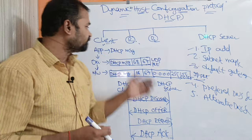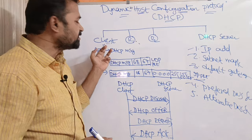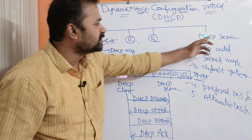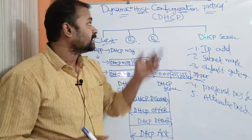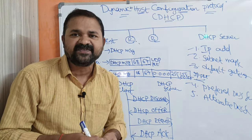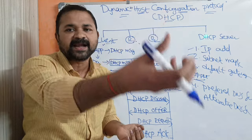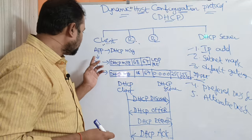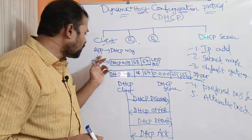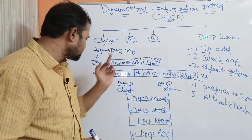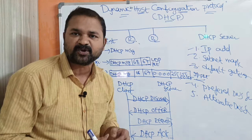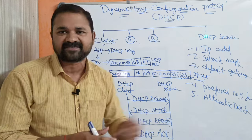Here we have a network with a DHCP client machine, Router 1, Router 2, and a DHCP server. DHCP is an application layer protocol. The message will be transmitted from the upper layer down to the lower layers — from application layer to transport layer, and then to the network layer.